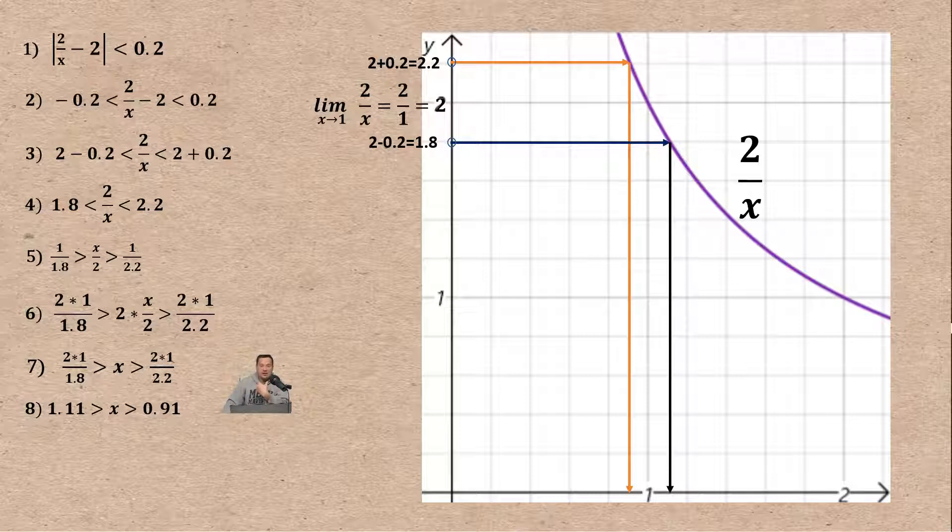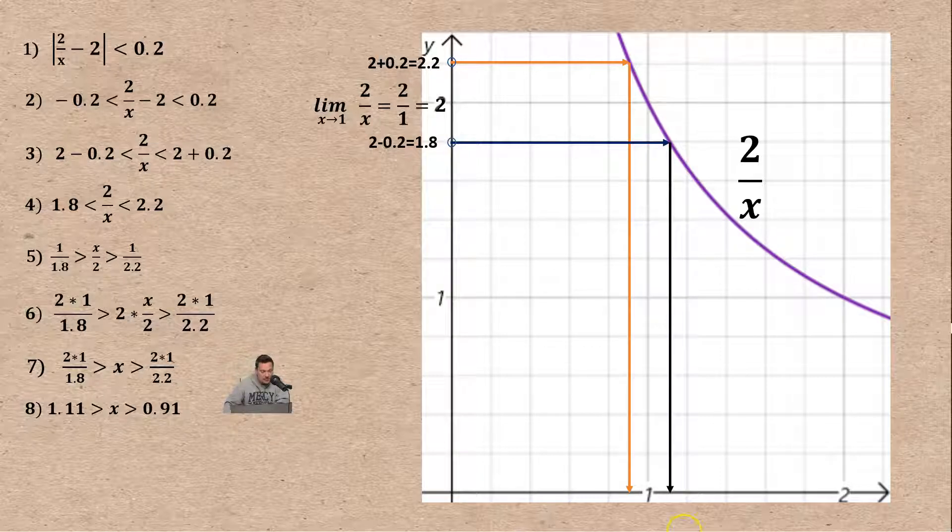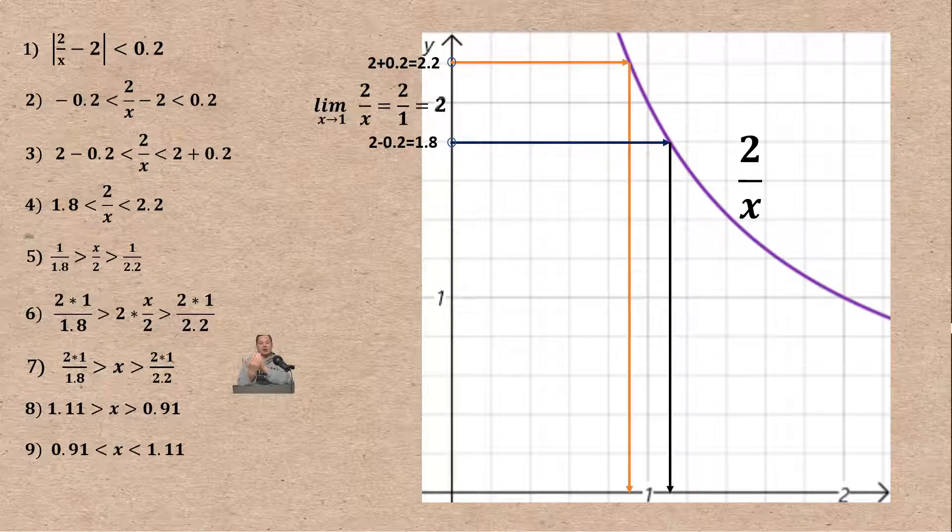Usually we arrange values so the smaller is on the left and the bigger is on the right. At step number eight I'm going to transition to nine by rotating the inequality. It becomes 0.91 less than x less than 1.11. It's an equivalent statement. Eight and nine look different to the eye but they're not. They mean exactly the same thing.